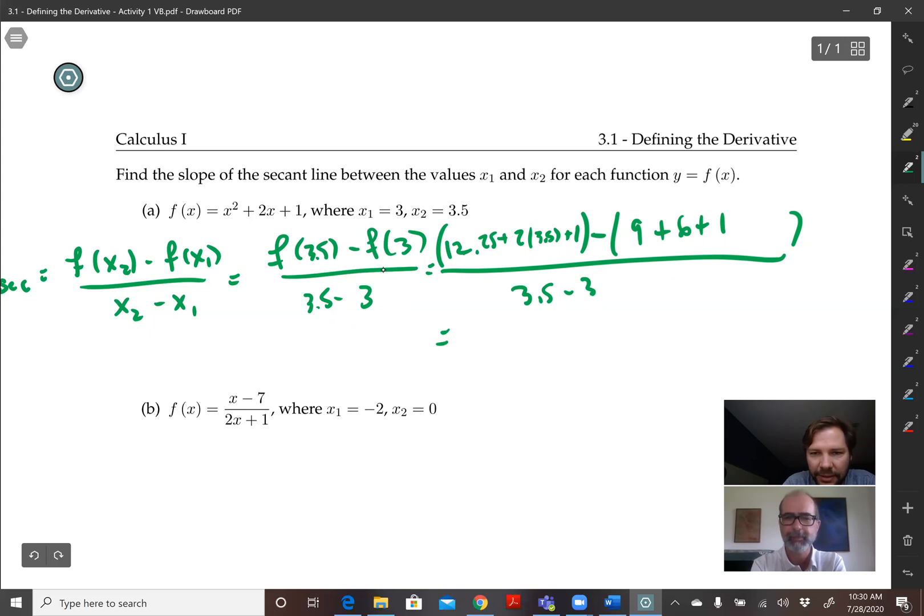So if I did that right, that would be 7 plus 12.25 plus 1 is 20.25 minus 16, all over 0.5. That's 4.25 all over 0.5, which is the same—dividing by 0.5 is the same as multiplying by 2. So that's 8.5, the slope of the secant line between those two points.